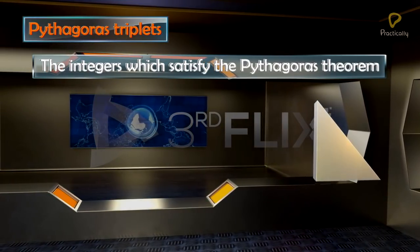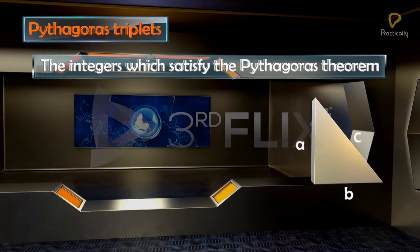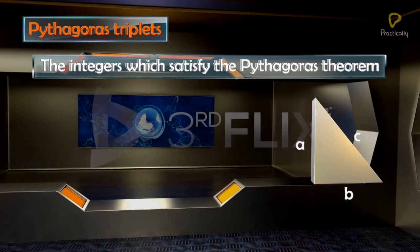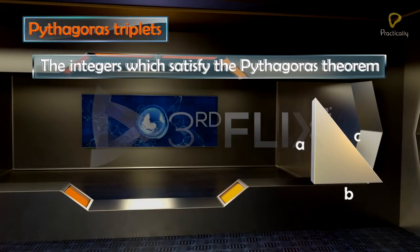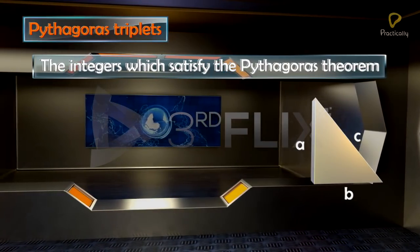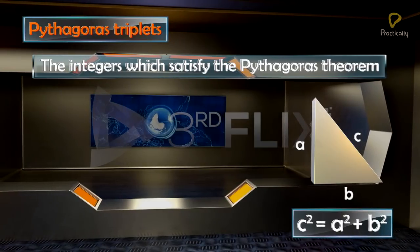Three positive integers A, B, and C are said to be a Pythagoras triplet if they satisfy the condition C² = A² + B².